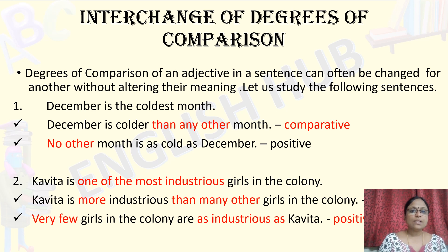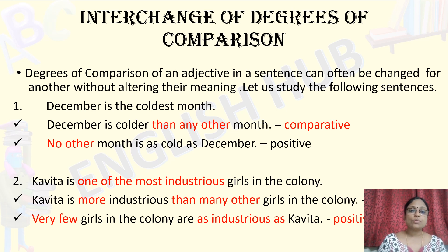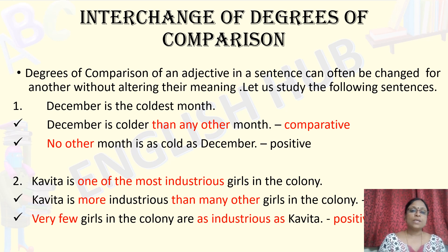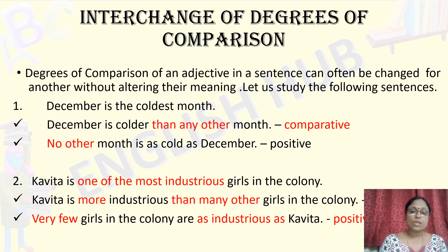December is the coldest month — this will be the question in the paper, and you will be asked to begin with 'no other,' or you will be asked to change the given sentence into comparative form. The second sentence in comparative form is: December is colder than any other month.